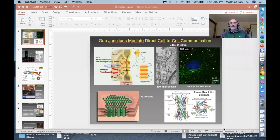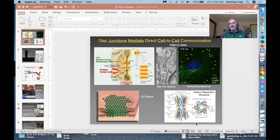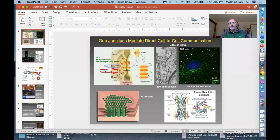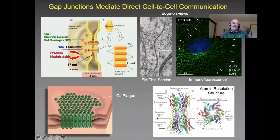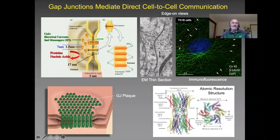That is especially important during embryonic development. Cells are at least as sophisticated in communicating as we are. They have developed many different mechanisms, and one of them is direct cell-to-cell communication, which is provided by gap junction channels that bridge the surface membranes of adjacent cells, and by that link the cells of a tissue together.